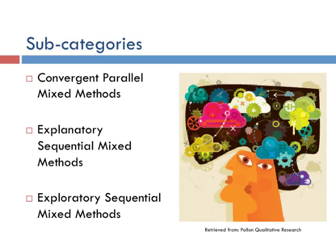Convergent parallel mixed methods research is when the researcher converges quantitative and qualitative data to give a comprehensive analysis of the research problem. In this method, both sets of data are collected around the same time.